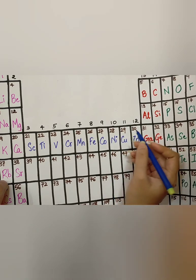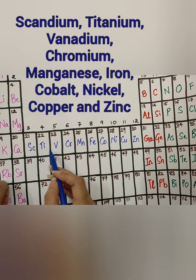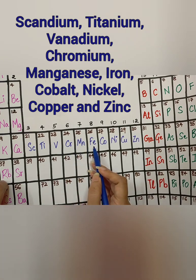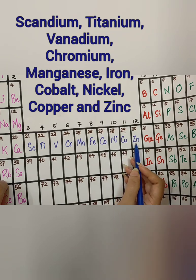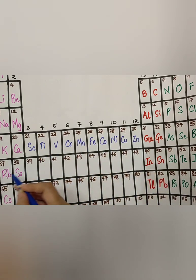The elements are, Scandium, Titanium, Vanadium, Chromium, Manganese, Iron, Cobalt, Nickel, Copper, and Zinc. Moving on to the 5th period, again from Group 3 to Group 12.